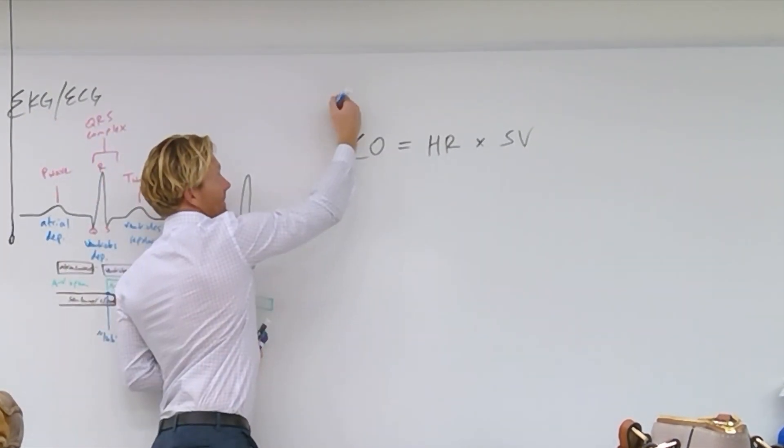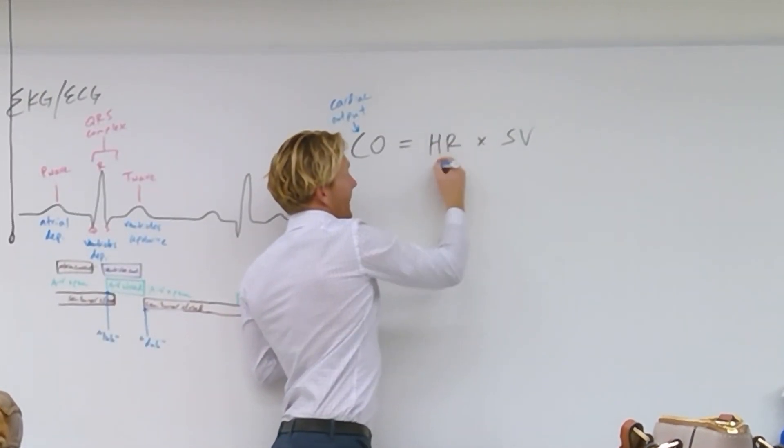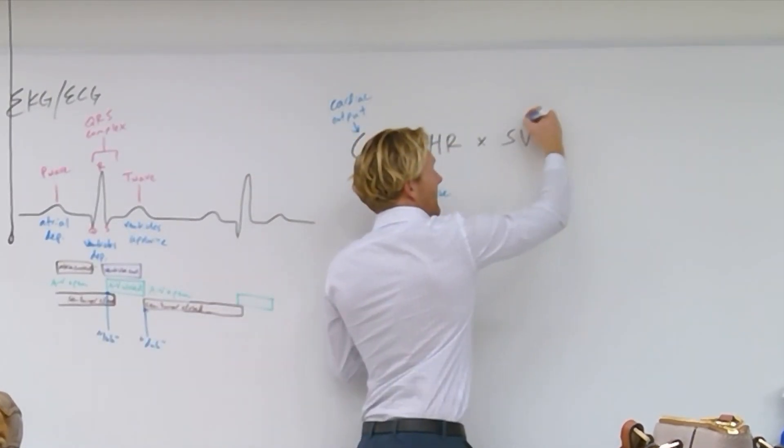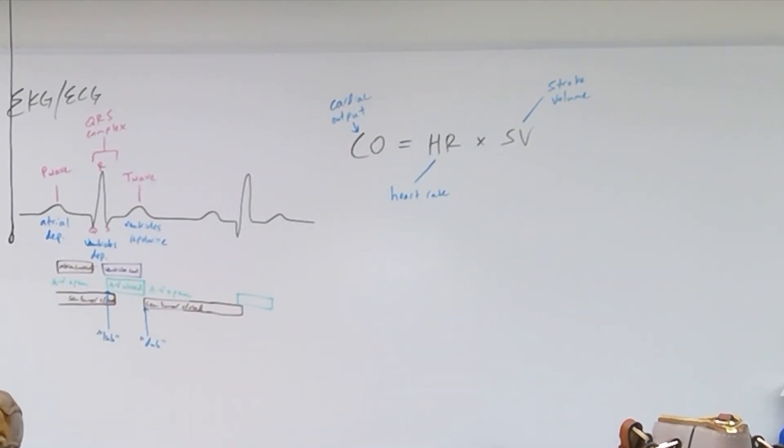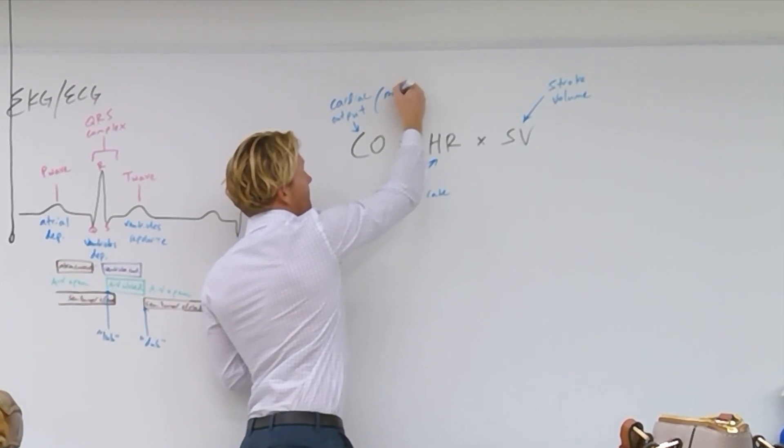So CO is cardiac output, HR is heart rate, SV is stroke volume. Cardiac output, again, is how much blood comes out of the heart in a minute. The units for that are milliliters per minute.